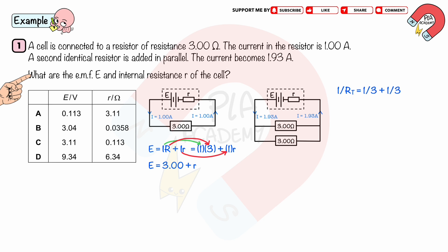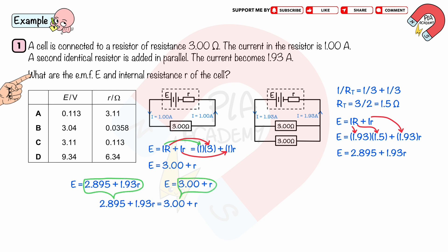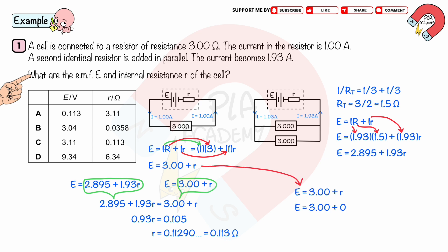For the second circuit, we calculate the total resistance: 1/R_T equals 1/3 plus 1/3, so R_T equals 1.5 ohms. Substituting I equals 1.93 A and R equals 1.5 ohms, we get E equals 2.895 plus 1.93r. Solving the two simultaneous equations, we get the internal resistance r equals 0.113 ohms (to three significant figures). Substituting back, we get EMF E equals 3.11 volts (to three significant figures).